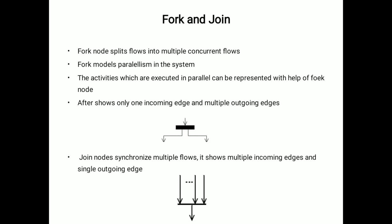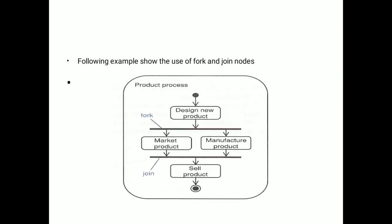Join node synchronizes multiple flows. It shows multiple incoming edges and a single outgoing edge. Now with the example, we will see it.